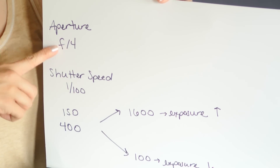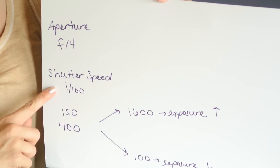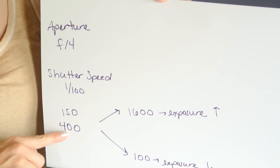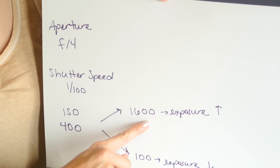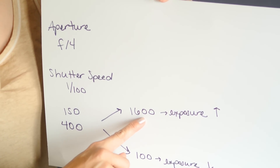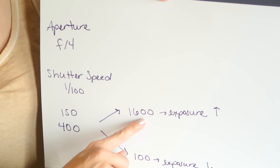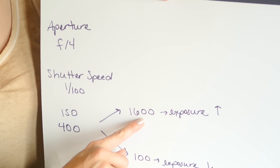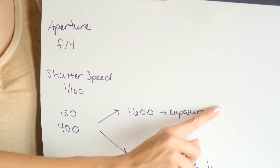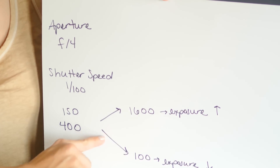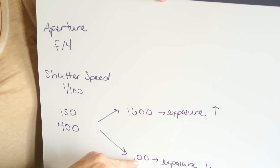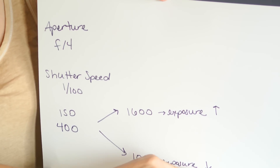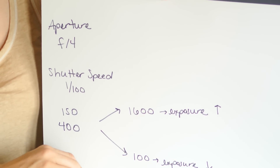If we leave aperture at f4 and shutter speed at 1/100, and change our ISO from 400 to 1600, we are increasing our image sensor sensitivity, so our exposure is going to go up. But if we decrease the sensitivity to light to, say, 100, our exposure is going to go down.